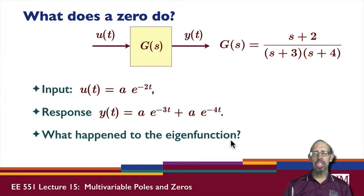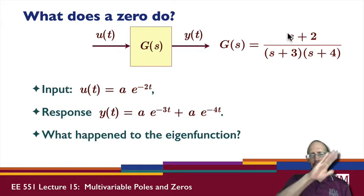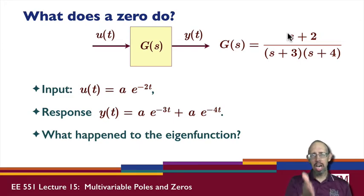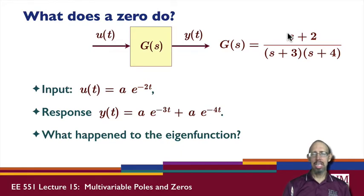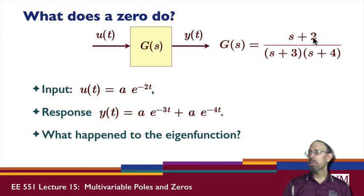I can think of a zero of a system as being like a notch filter — a filter with a frequency response that has a notch in it. If you have a notch and try to apply an input at that notch frequency, nothing of that frequency will come through. That's basically what's happening here: the zero is notching out the input that we've applied. That's what zeros do when you have them in a system.